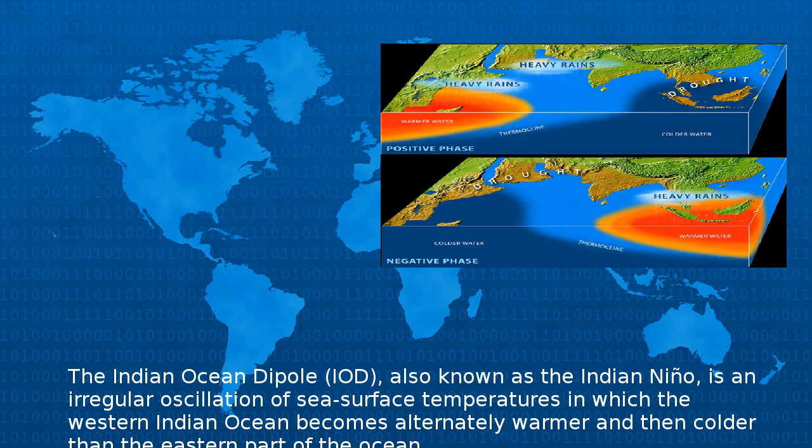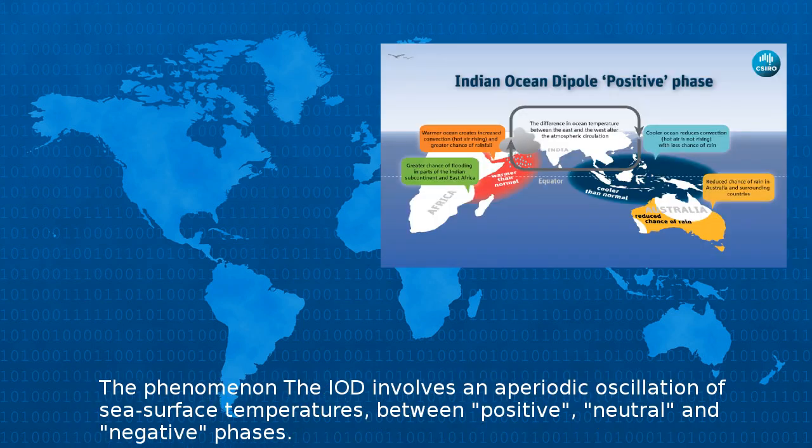The Indian Ocean Dipole, also known as the Indian Niño, is an irregular oscillation of sea surface temperatures in which the western Indian Ocean becomes alternately warmer and then colder than the eastern part of the ocean.